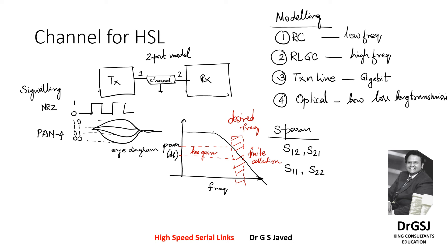The output that comes from the channel would be a degraded signal. For a signal that should represent zero and one levels, how do you determine what is zero and what is one from a very small attenuated signal? You cannot. So you have to find a means and method to recover this portion of the gain. This attenuation is seen in the frequency response of the channel.